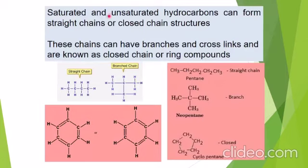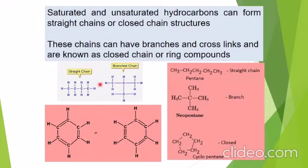Saturated and unsaturated hydrocarbons can form straight chain or closed chain structures. These chains can have branches and crosslinks and are known as closed chain or ring compounds. This is a straight chain, this is a chain having a branch where carbon is further substituted, and this is a closed ring chain compound — straight chain, branched chain, and closed chain.